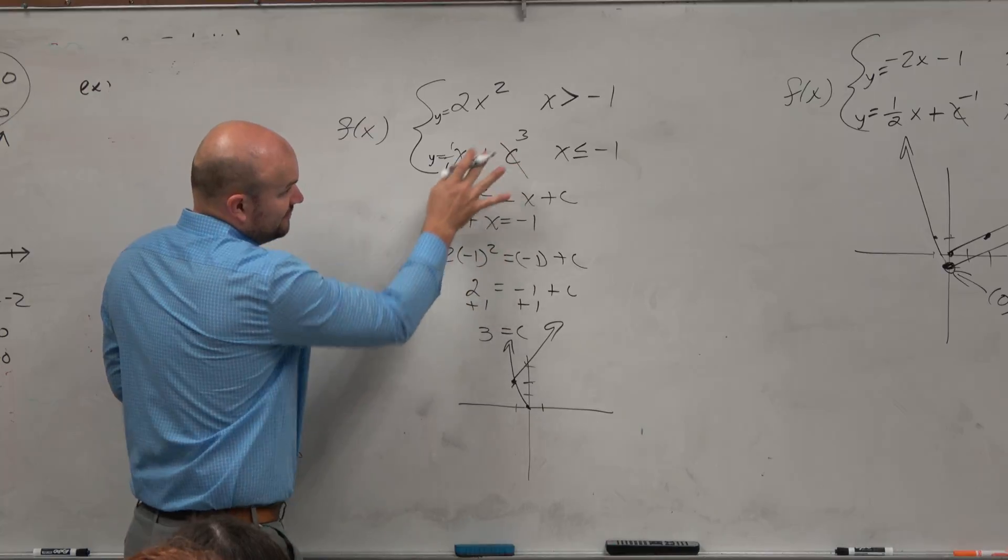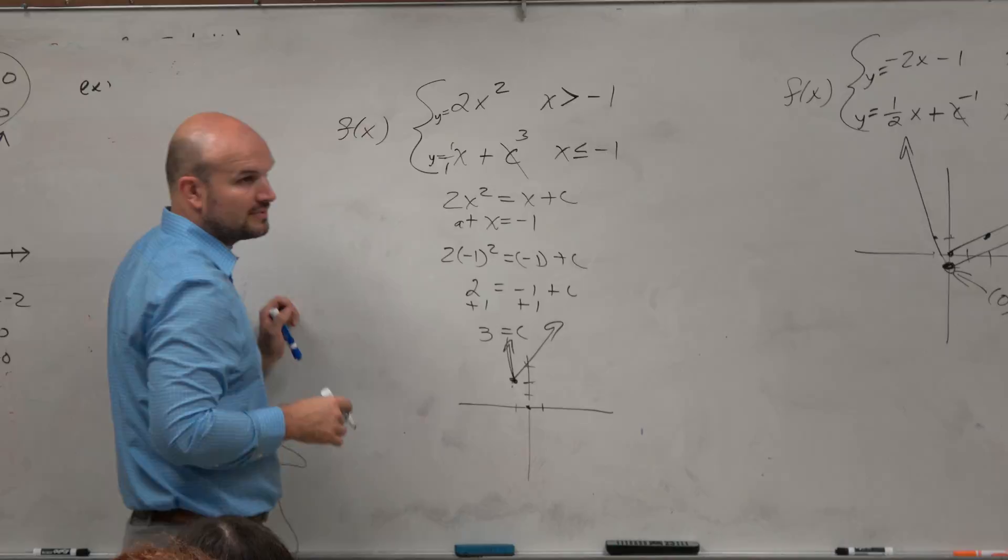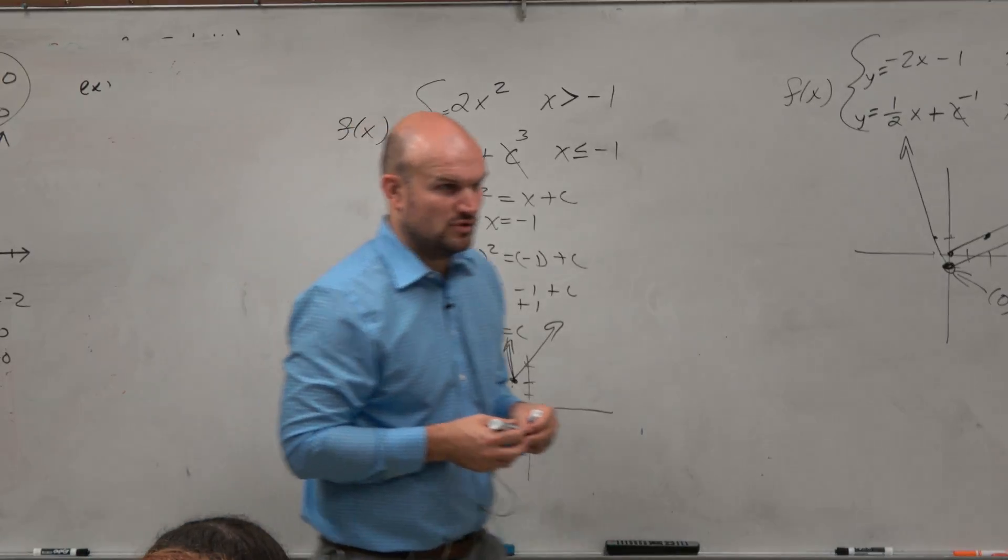But then again, it's only for x values that are less than negative 1, so that would be contained. So it would be like a slope in there. But you guys can see how that kind of works.